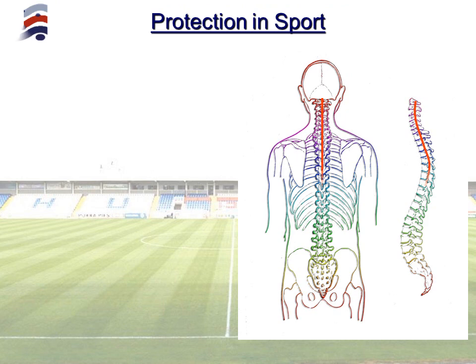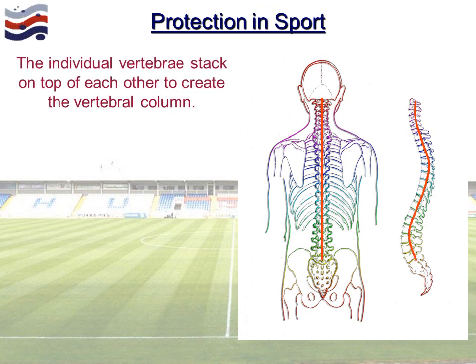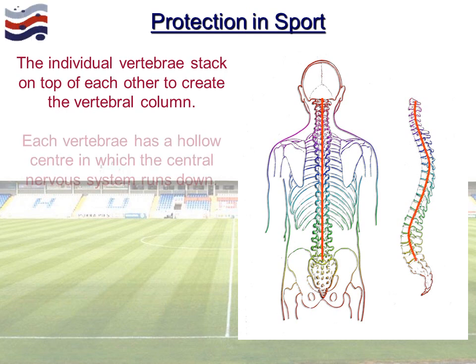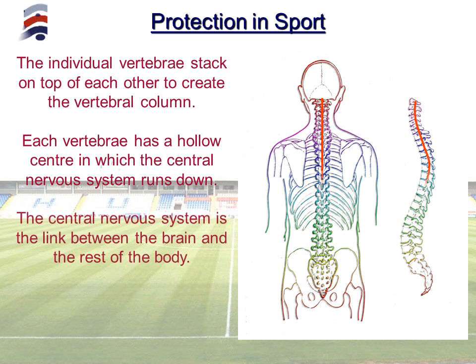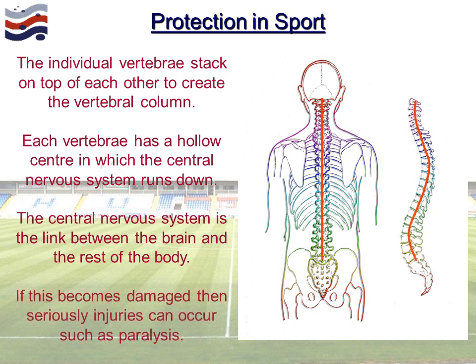While we're on the vertebral column — the vertebrae are individual bones that stack on top of each other. Each vertebra has somewhat of a hollow, and once stacked, the central nervous system runs down through these holes, all the way from the back of the brain down to the base of the spine. These are the integral nerves that send every message from the brain to different parts of the body. Because of how important this is, if it becomes damaged, serious injuries can occur — including paralysis.